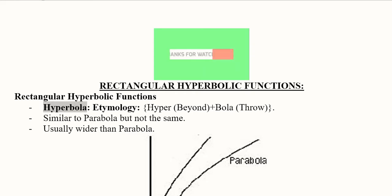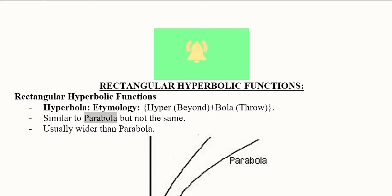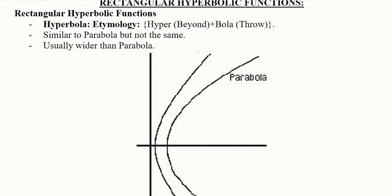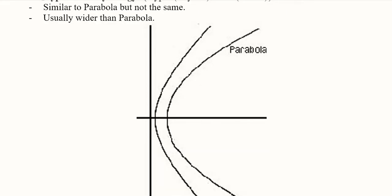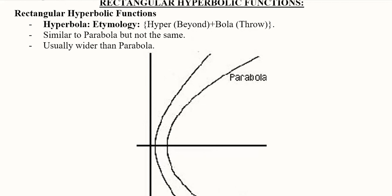Let us do a little etymology of the word 'hyperbola.' Hyperbola is composed of two words: 'hyper,' meaning beyond, and 'bola,' meaning throw. 'Parabola' is alongside a throw, as 'para' means alongside and 'bola' means throw. So parabola is here in this diagram, but hyperbola is above it — it is beyond the parabola.